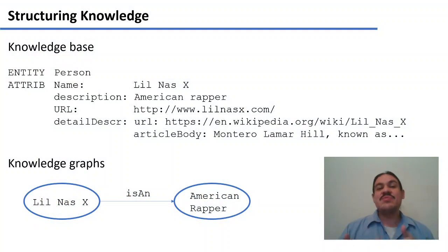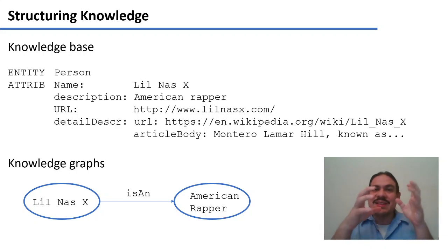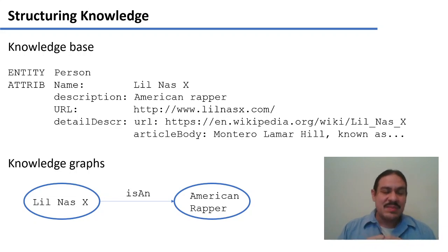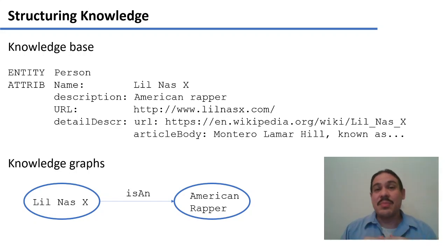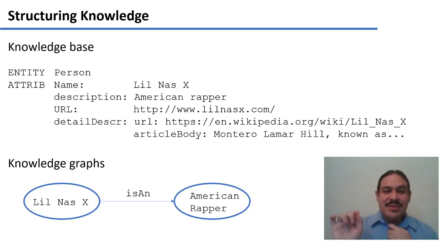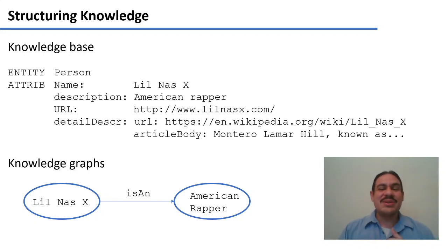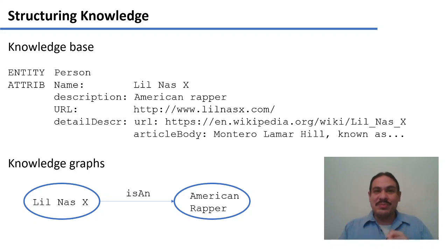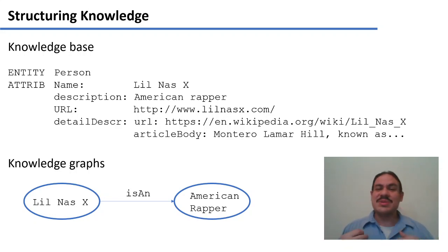We looked at a relational database, and this week we're also going to be working with other types of structures to compile knowledge and have it accessible to our computer systems. We're going to look at knowledge bases, which are similar to relational databases — they have entities. For example, you could describe a person: this one refers to the rapper Lil Nas X, who has a name, a description, a URL, and a detailed description with sub-attributes. This is part of the Google Knowledge Graph API, which compiles information from the internet about people, places, and things that Google needs for its searches. It has about 17 billion facts about the world.